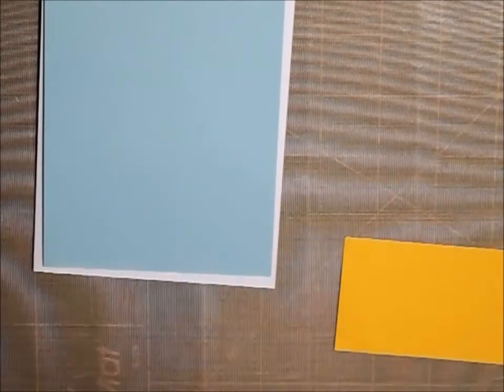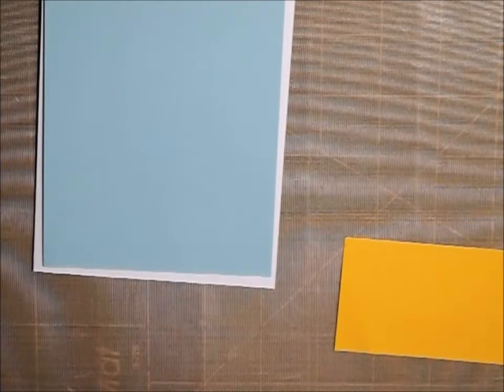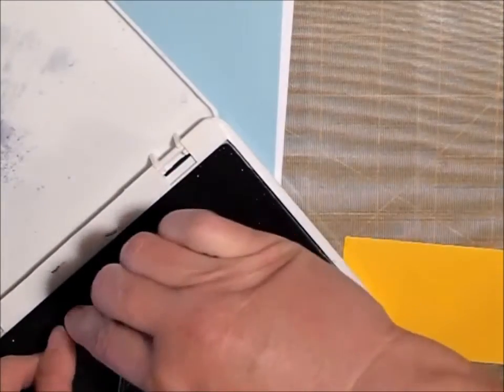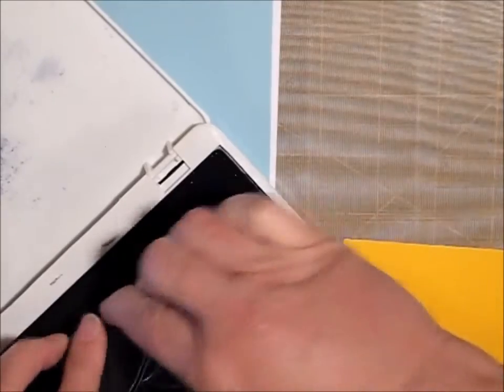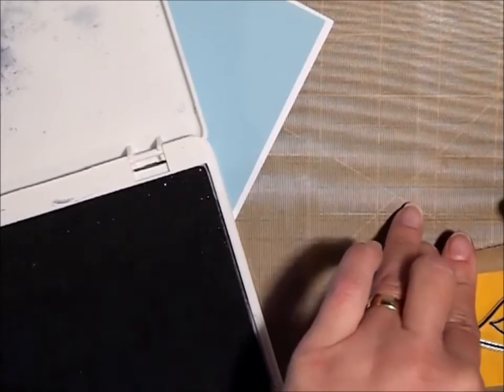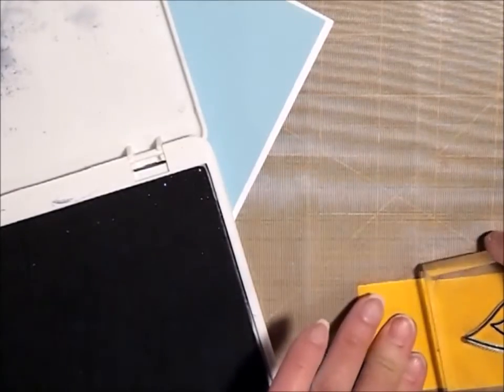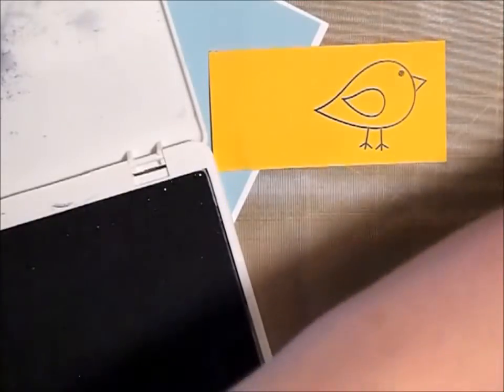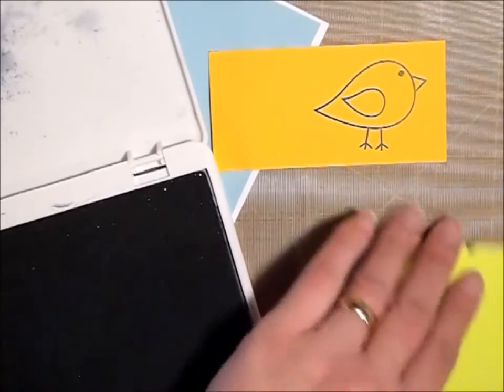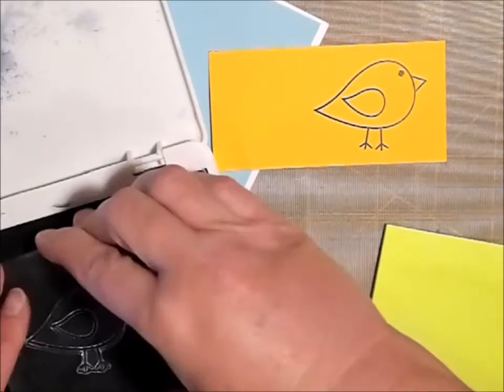I'm just going to stamp him right here using my archival jet black ink. I'm going to fussy cut him out and then stamp him again on the green paper, but I'm going to cut off his legs.